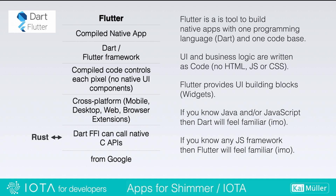In my search I also found Flutter. Flutter comes from Google and is a tool to build native apps with one programming language — Dart, not JavaScript. You have one code base and UI and business logic are all written in Dart, so you don't handle HTML, JavaScript, and CSS anymore. It sounded a bit weird at first to write UI and business logic as code, but in the end you get a compiled native app for mobile, desktop, web, and browser extensions.